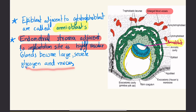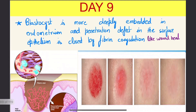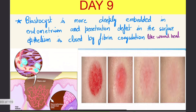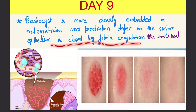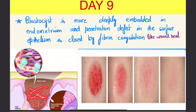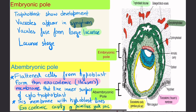The endometrial stroma adjacent to the implantation site is highly vascular; glands become large and secrete glycogen and mucus, as it is in the secretory phase — more glandular and fit for implantation. At day 9, the blastocyst is deeply embedded in the endometrium and the penetration defect in the surface epithelium is closed by fibrin coagulation, like wound healing. There are two poles: the embryonic pole where the embryo is, and the ab-embryonic pole where there is no embryo.